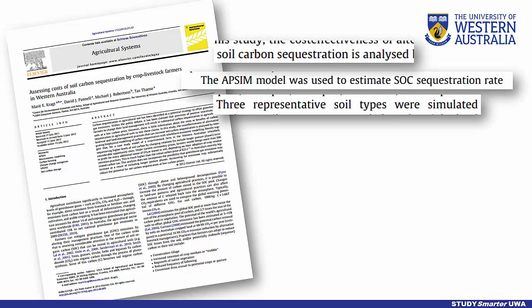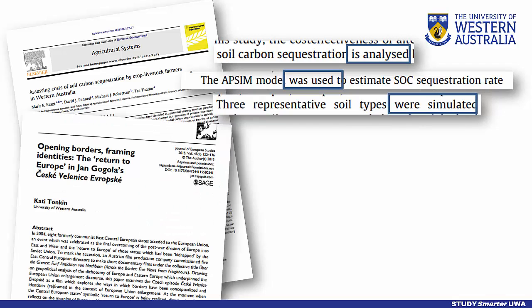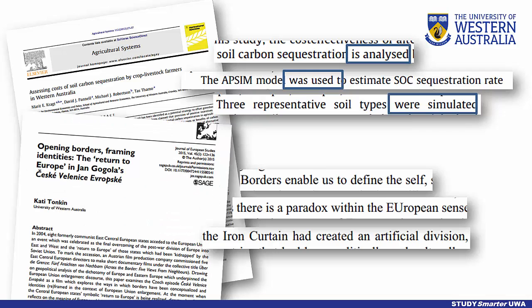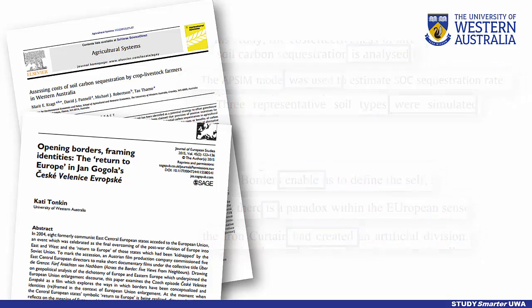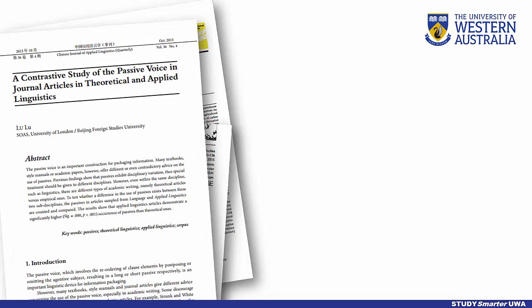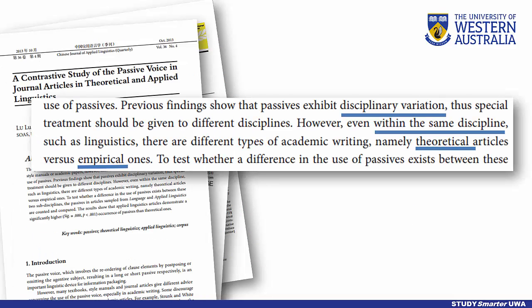In academic writing, the passive voice is typically used in studies that rely on experiments, and the active voice is much more common in studies, papers, and sections of papers that emphasize theory and analysis.